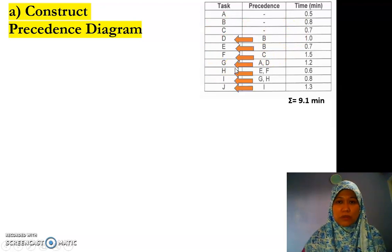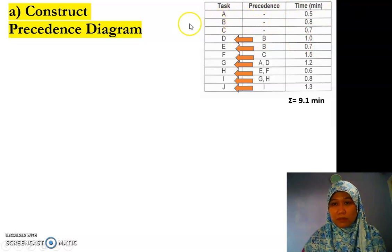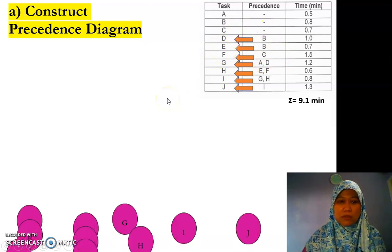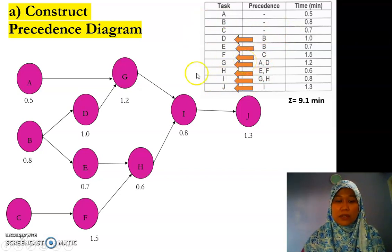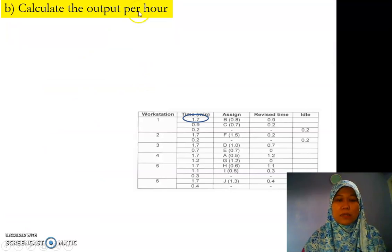So how to read the table: precedence means the task that comes before. You just draw the arrow — after B we have D, after B we have F and E, after C we have F. By having these arrows you can draw the precedence diagram. These are all the tasks and the arrows show the connection. Make sure it's correct and don't forget to put the time for each task. That answers question A.